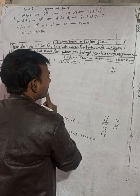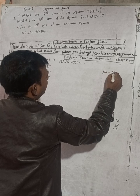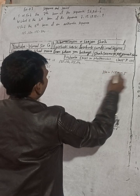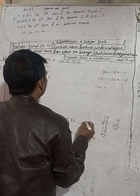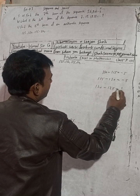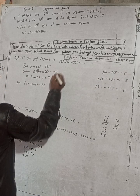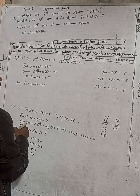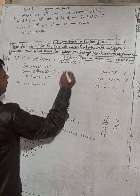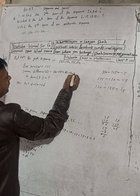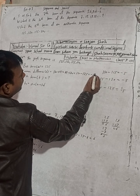The common difference is found by subtracting consecutive terms: 110 − 115 = −5, 115 − 120 = −5, and 120 − 125 = −5. We can see the same common difference throughout: D equals −5.